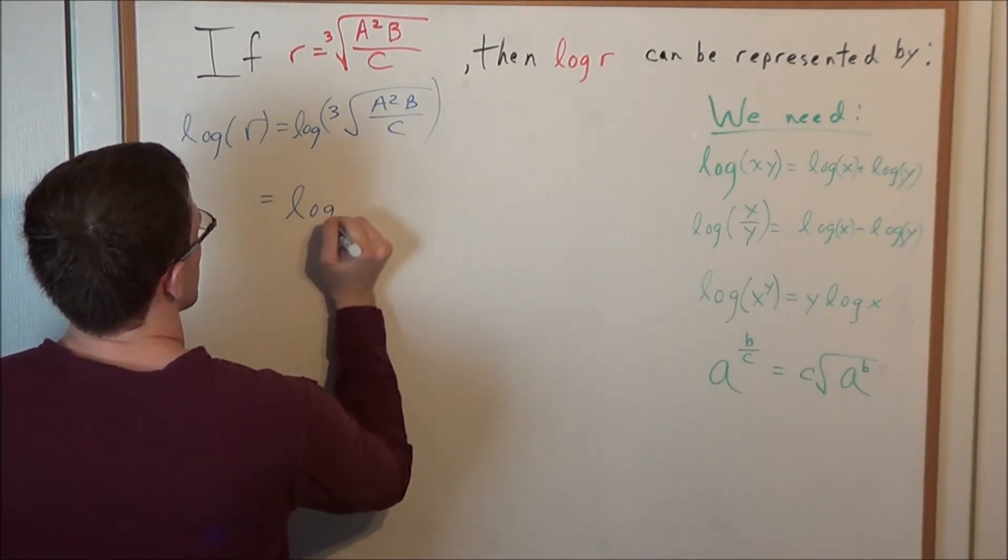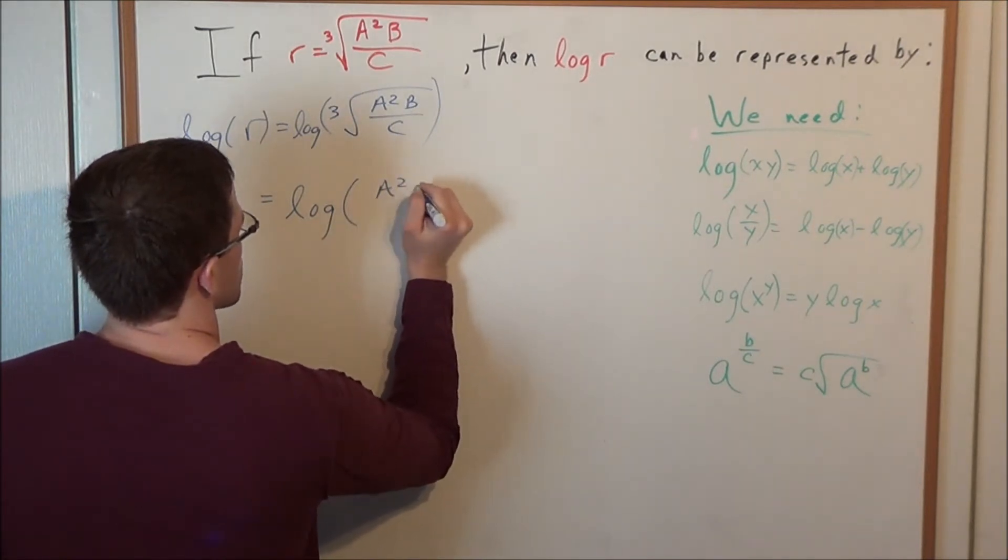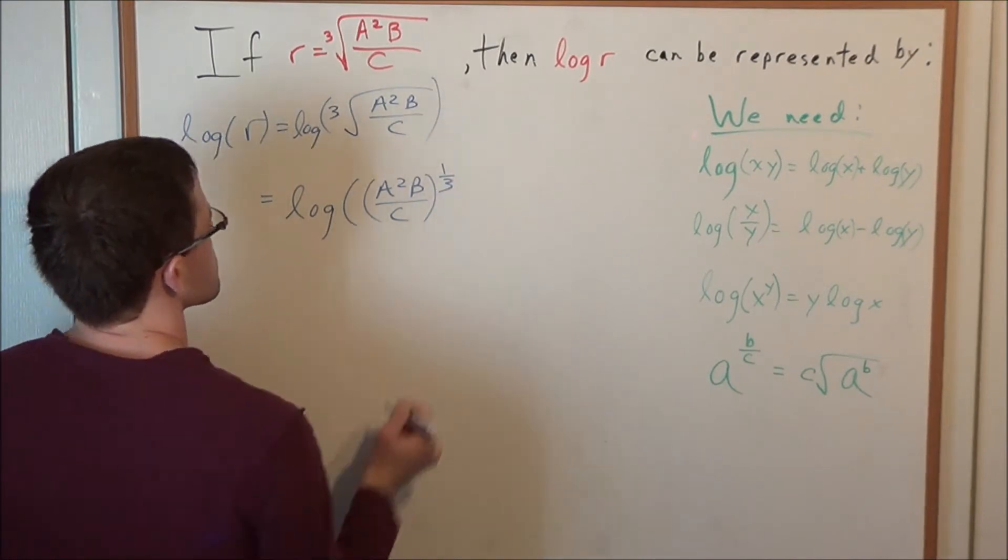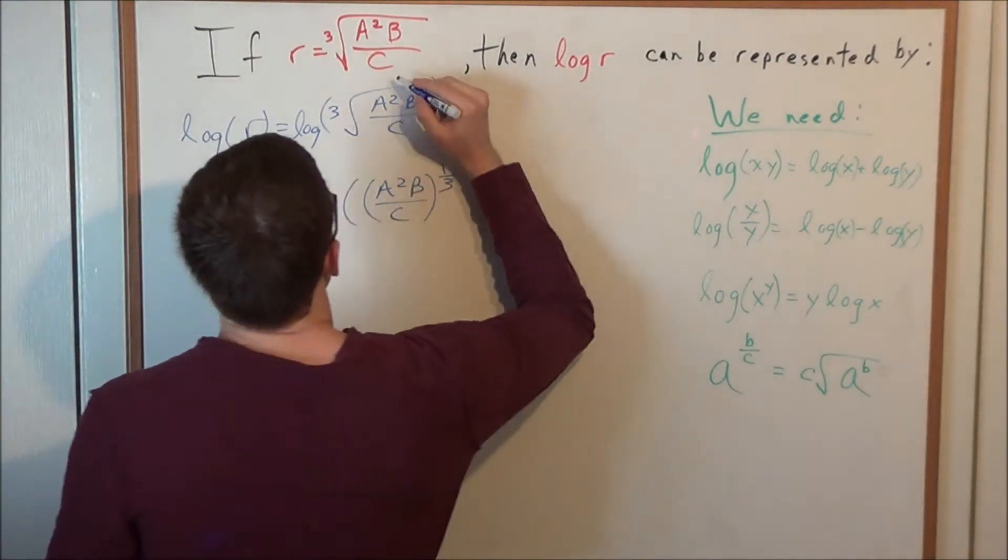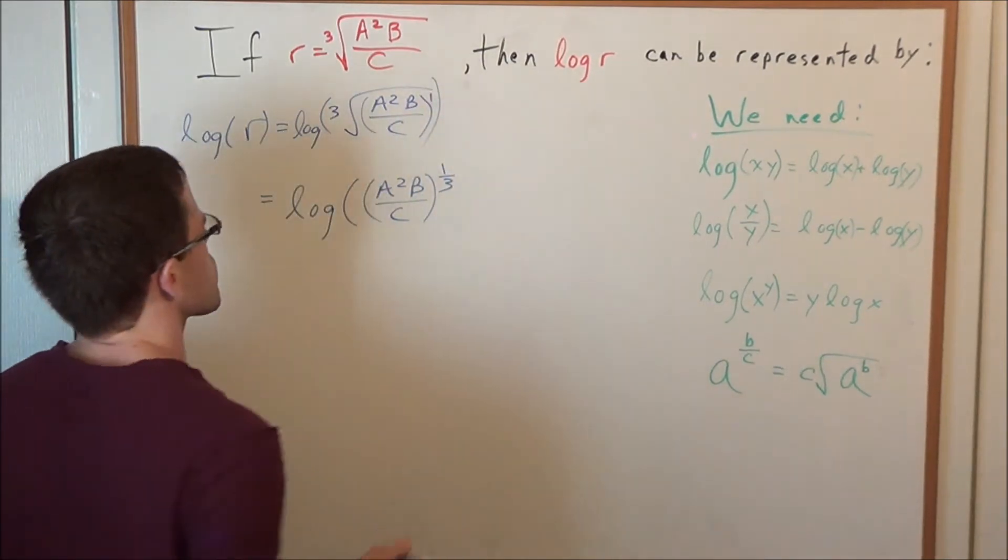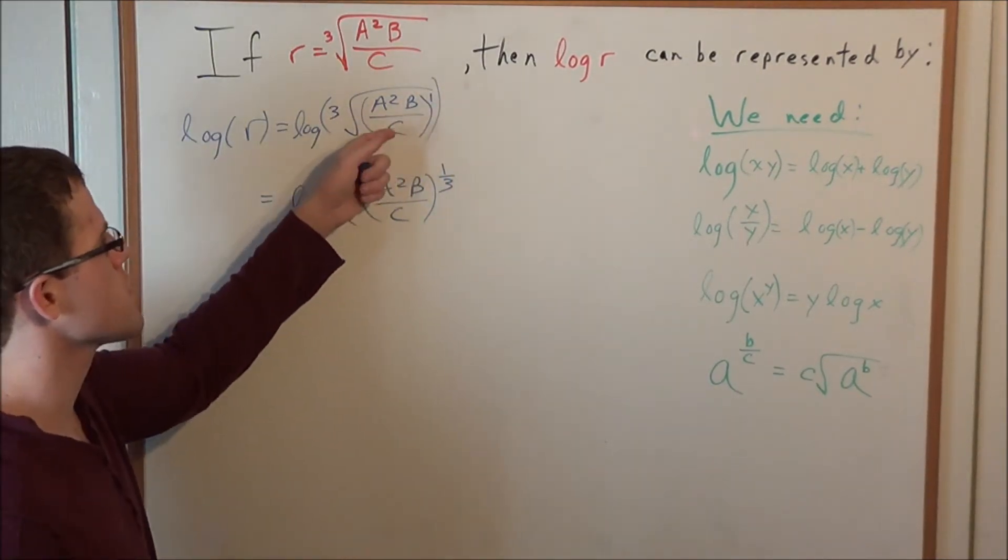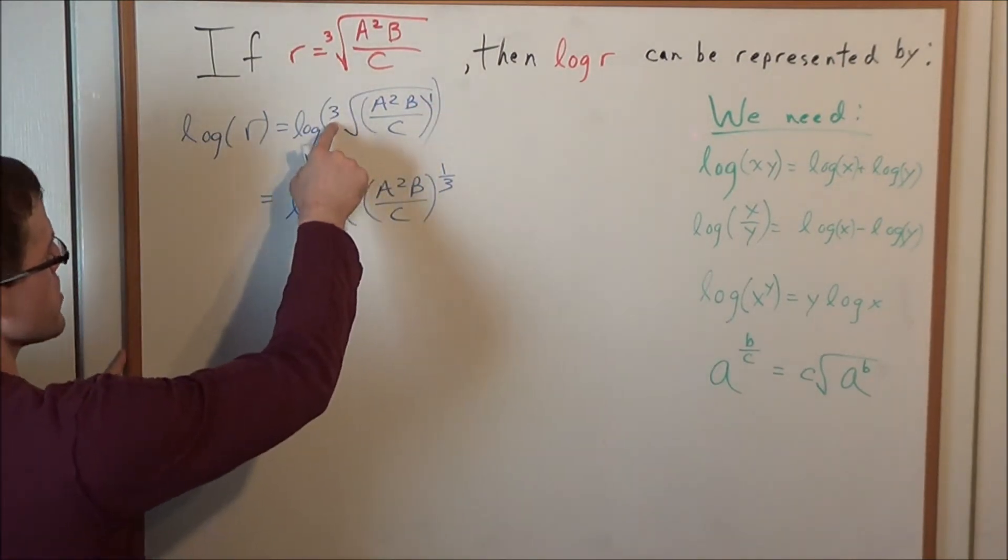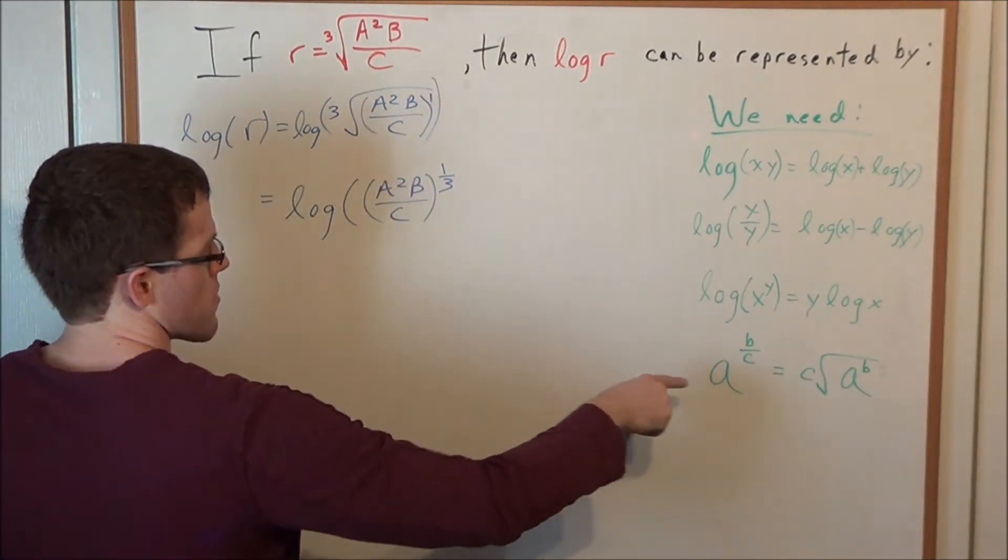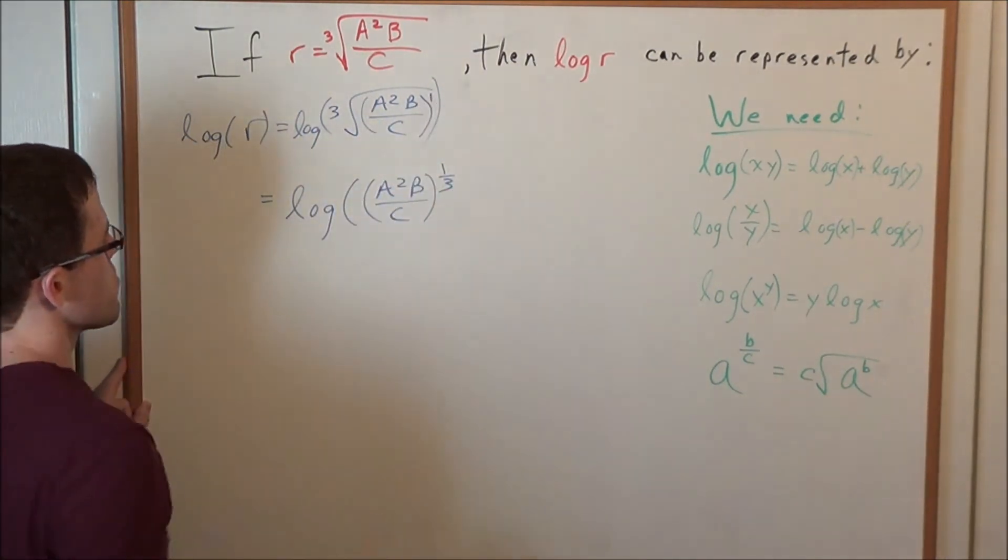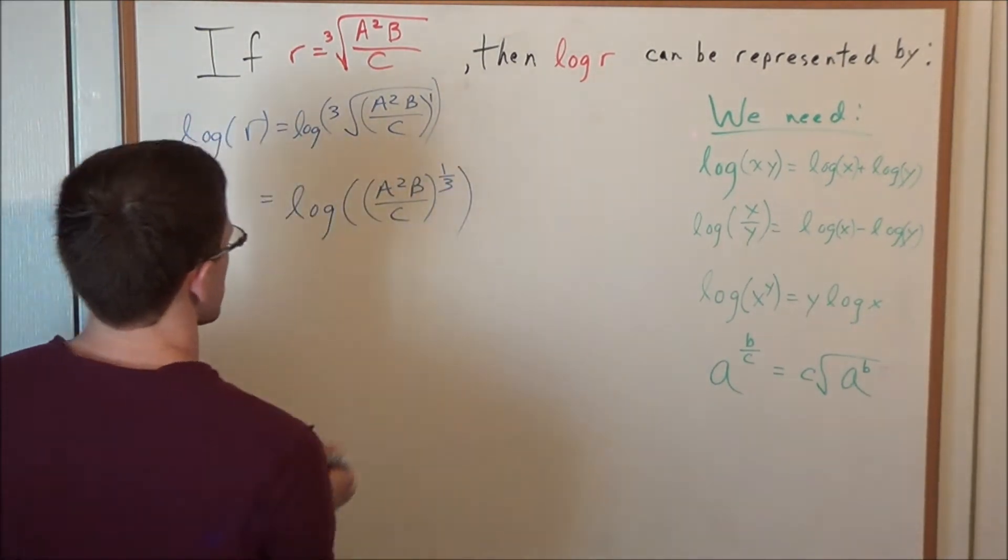Keeping in mind that this entire expression here in some sense is being raised to the first power because anything raised to the first power is just equal to itself. So this three outside of the radical sign is going into the denominator and this one is going into the numerator.